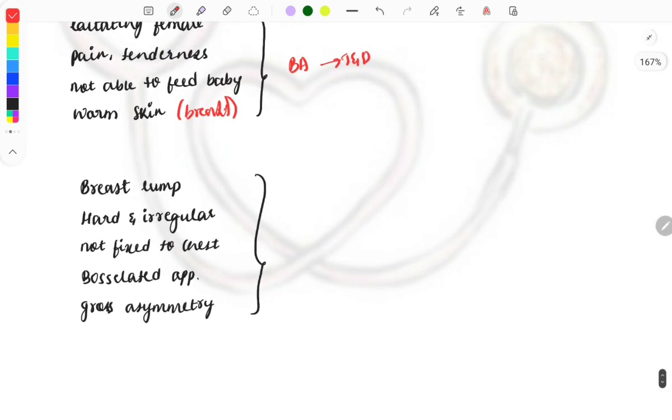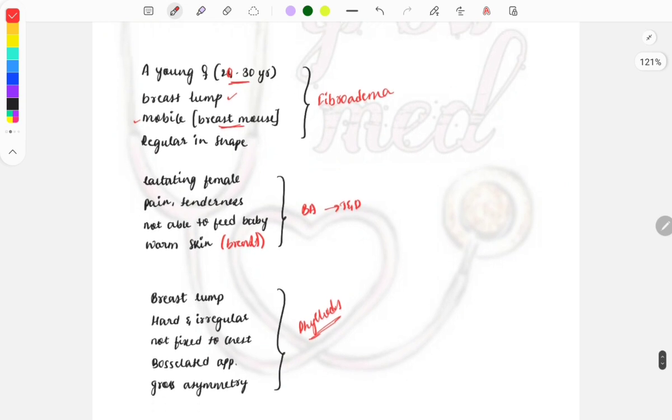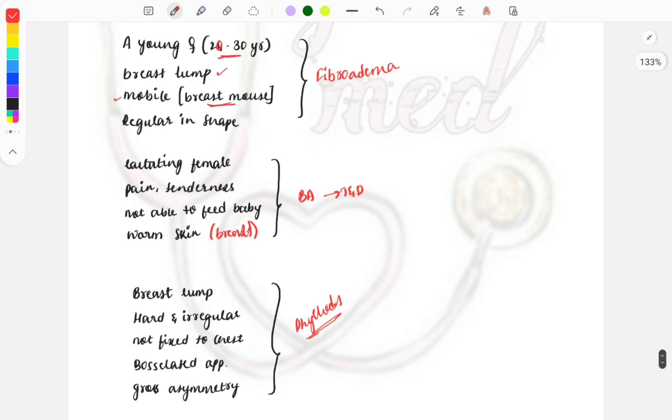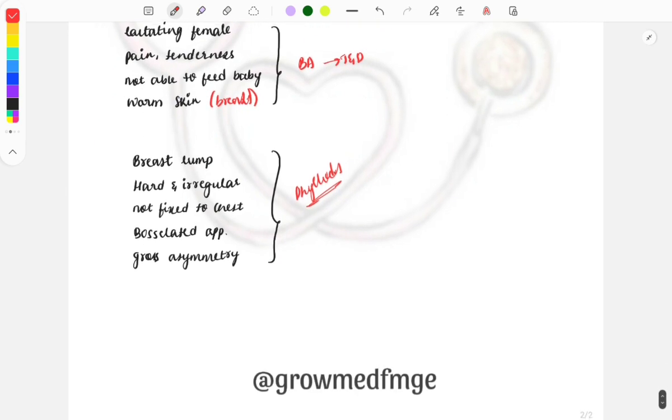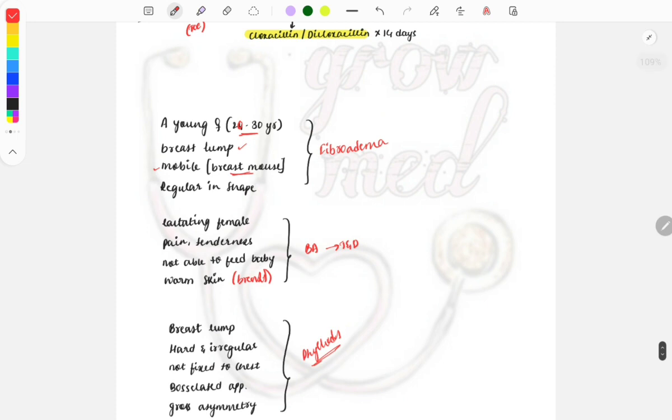Another case: breast lump that's hard and irregular, not fixed to chest, gives bossellated appearance, and gross asymmetry—this is phylloides tumor. If you break down the terms and read the case carefully, finding hint words in the question, you can easily solve it. Look for these key hints in clinical cases, which are usually described as a female coming to clinic with complaints. What will be the diagnosis?